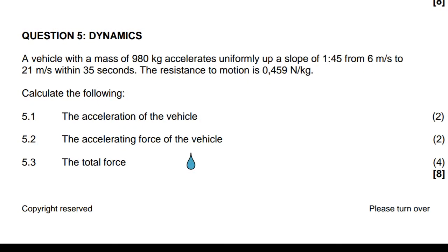A vehicle with a mass of 980 kg accelerates uniformly up a slope of 1 in 245, from 6 meters per second to 21 meters per second within 35 seconds. The resistance to motion is 0.459 newtons per kg of the vehicle. The questions are: calculate the acceleration of the vehicle; calculate the acceleration force of the vehicle; and calculate the total force.